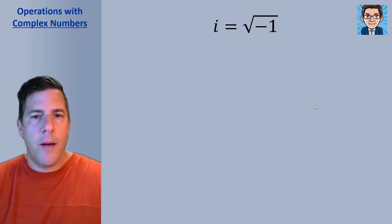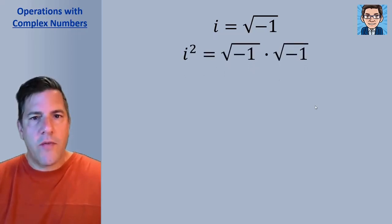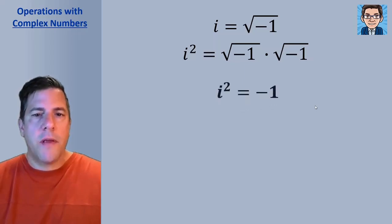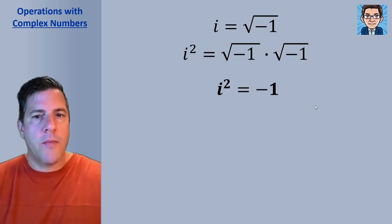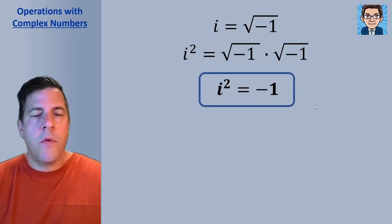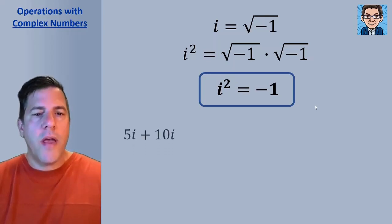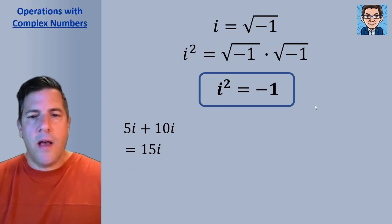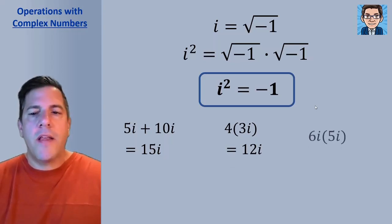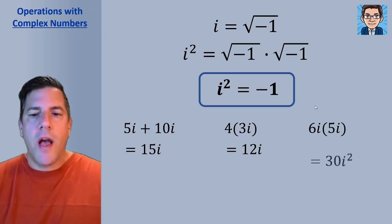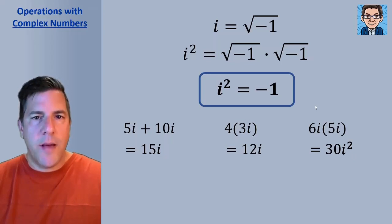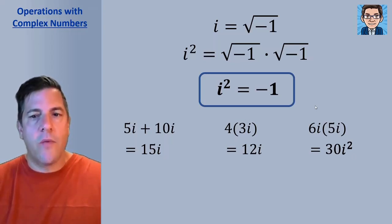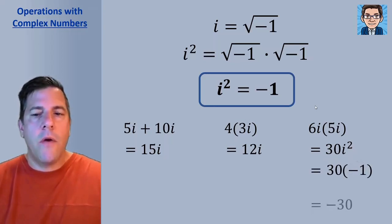An important concept when doing operations with complex numbers is i squared. If i is the square root of negative 1, then i squared equals negative 1. We treat i just like any other variable: 5i plus 10i gives 15i, and 4 times 3i gives 12i. But 6i times 5i gives 30i squared — and since i squared equals negative 1, we replace it to get 30 times negative 1, or negative 30.